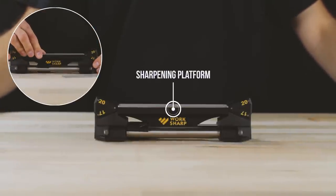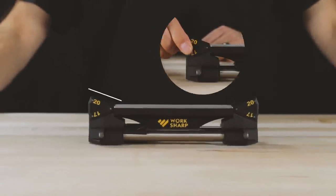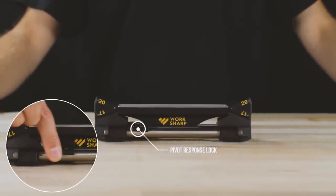17 and 20 degree sharpening guides are interchangeable and held in place with magnets. Slide lock with magnet allows for either pivot response or rigid settings.